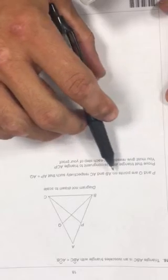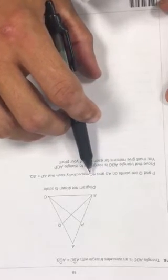And you're told that P and Q are points on AB and AC respectively such that AP and AQ are equal to each other. You have to prove that the triangle ABQ is congruent to the triangle ACP. So congruent means exactly the same size and exactly the same shape.